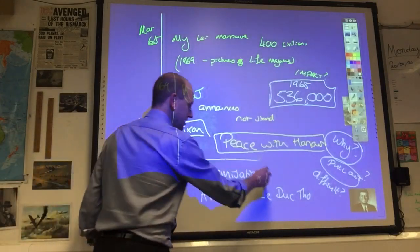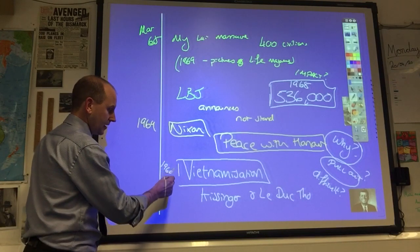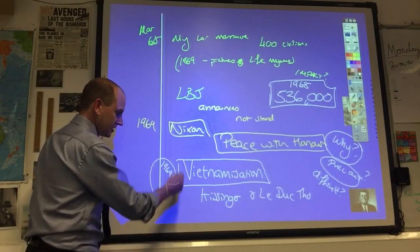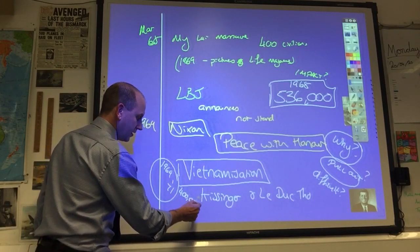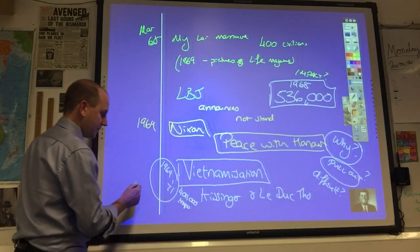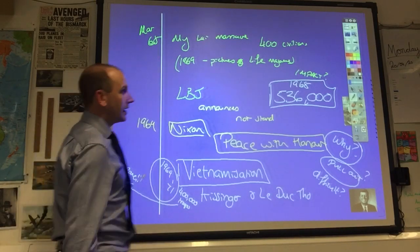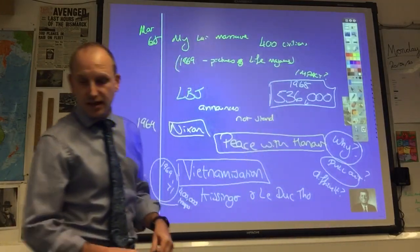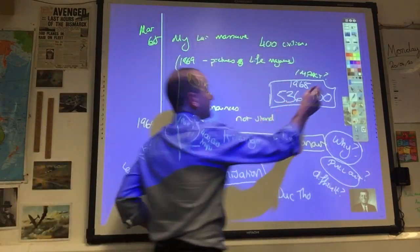With Vietnamization, Nixon's going to start pulling out troops. Between 69 and 71, he's going to pull out 400,000 troops from Vietnam. They're going to go back home, leave from the peak of 536,000.